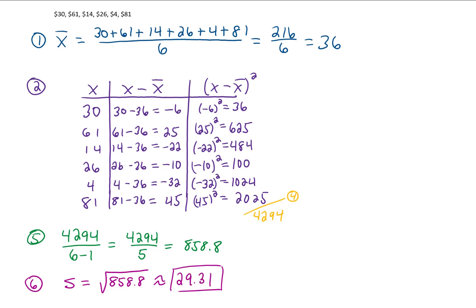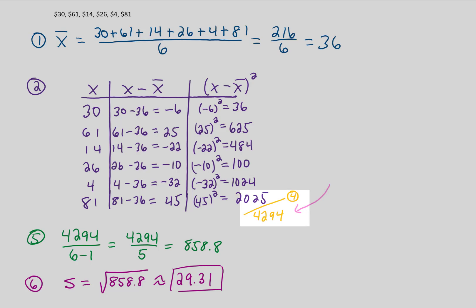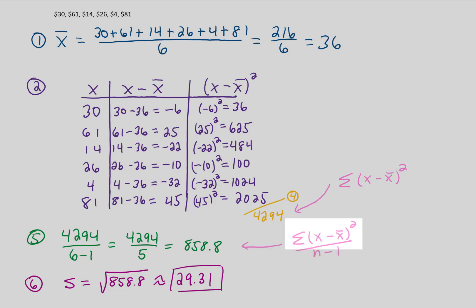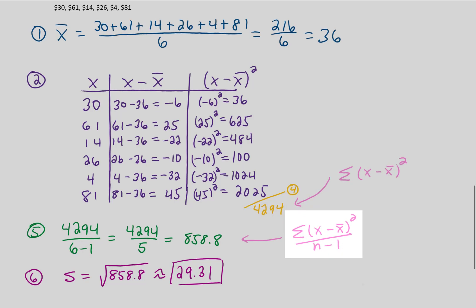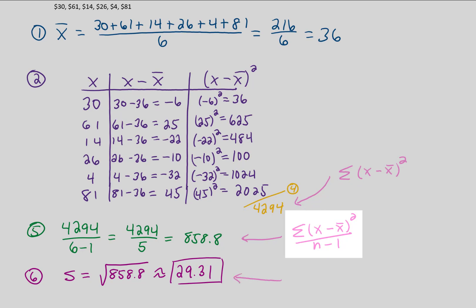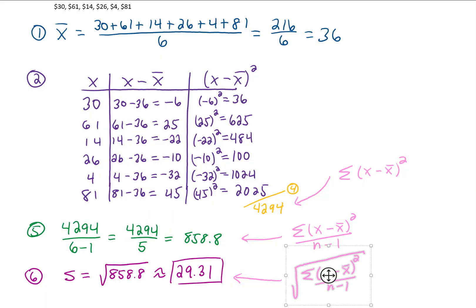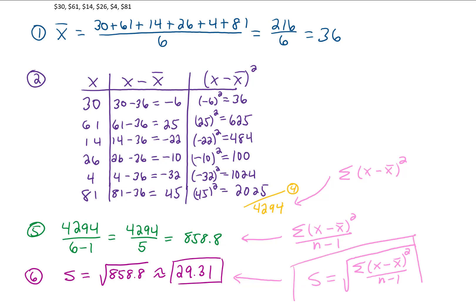If you can complete that calculation, you should be set for this section. One final note on notation: in the chart, x represents our data values, and (x minus x-bar) represents the difference between each value and the mean. In step 4, we add all of those squared results — written as the sum of (x minus x-bar) squared. In step 5, we divide that sum by n minus 1. In the final step, we take the square root of that whole result, which gives us s — the sample standard deviation. That is the formula you will see in textbooks.